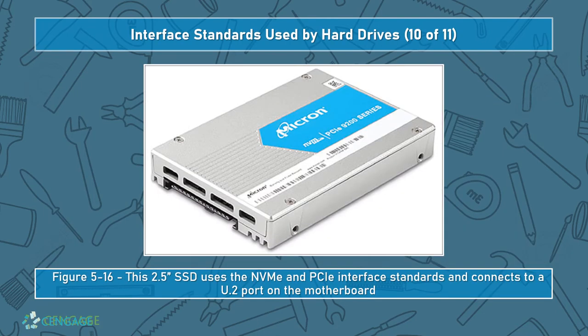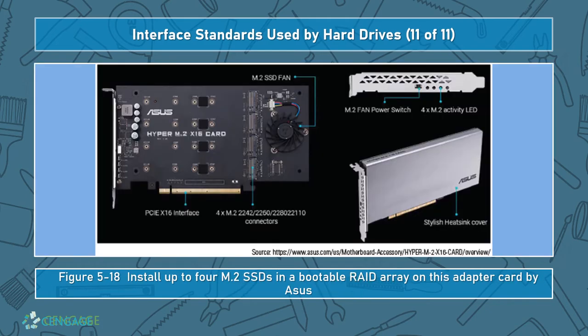Here we can see a U.2 port on the motherboard, a 2.5-inch solid-state drive, and a bootable RAID array card from ASUS using a PCI X16 interface — a full-size card with its own chipset, controller fan, heatsink cover, and activity switch. M.2 cards come in various lengths: 2242, 2250, 2280, and 2211.